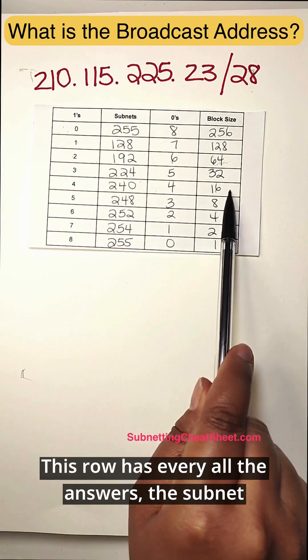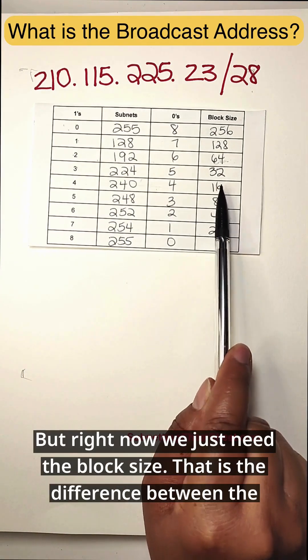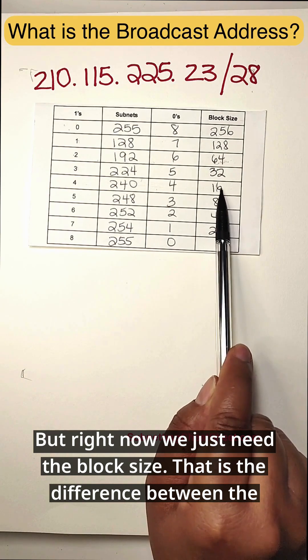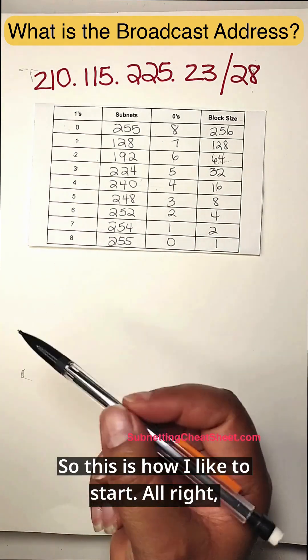This row has all the answers: the subnet mask, the subnet mask in addition to other things. But for right now, we just need the block size, that is the difference between the IP addresses.